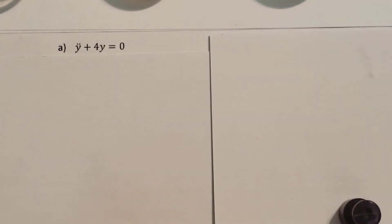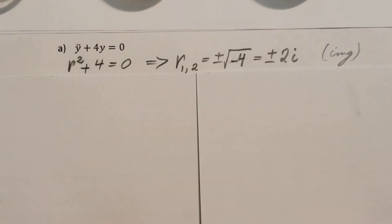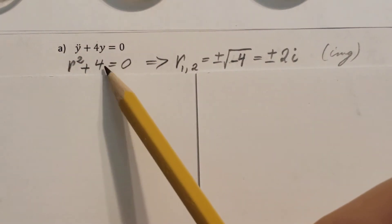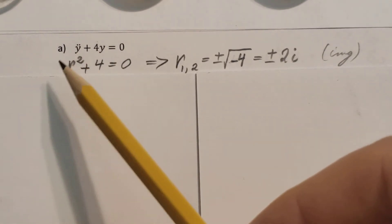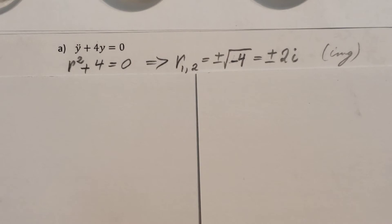It's a homogeneous equation, so let's go ahead and find the characteristic equation. Here we have it, r squared plus 4 equals 0. Make sure you don't accidentally put an r instead of the y as well. So r squared plus 4 equals 0.